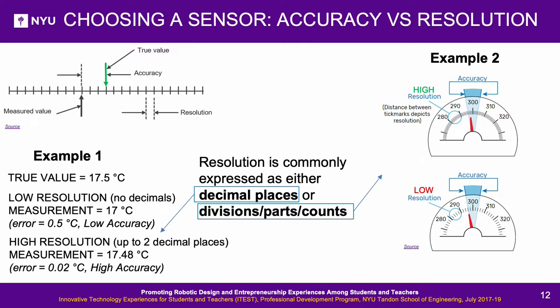Accuracy versus resolution: accuracy refers to the closeness of a measured value to a standard or known value. For example, if in a lab you obtain a temperature measurement of 17 degrees Celsius, but the actual temperature is 17.5 degrees Celsius, your measurement is not accurate — it has an error of 0.5 degrees Celsius. Resolution is the number of parts the output from a sensor can be broken down into without instability. It can be expressed as decimal places — for example, a reading of 17.48 degrees Celsius has a resolution of two decimal places — or as parts/divisions, such as 1 part in 10 versus 1 part in 5 for a speedometer.